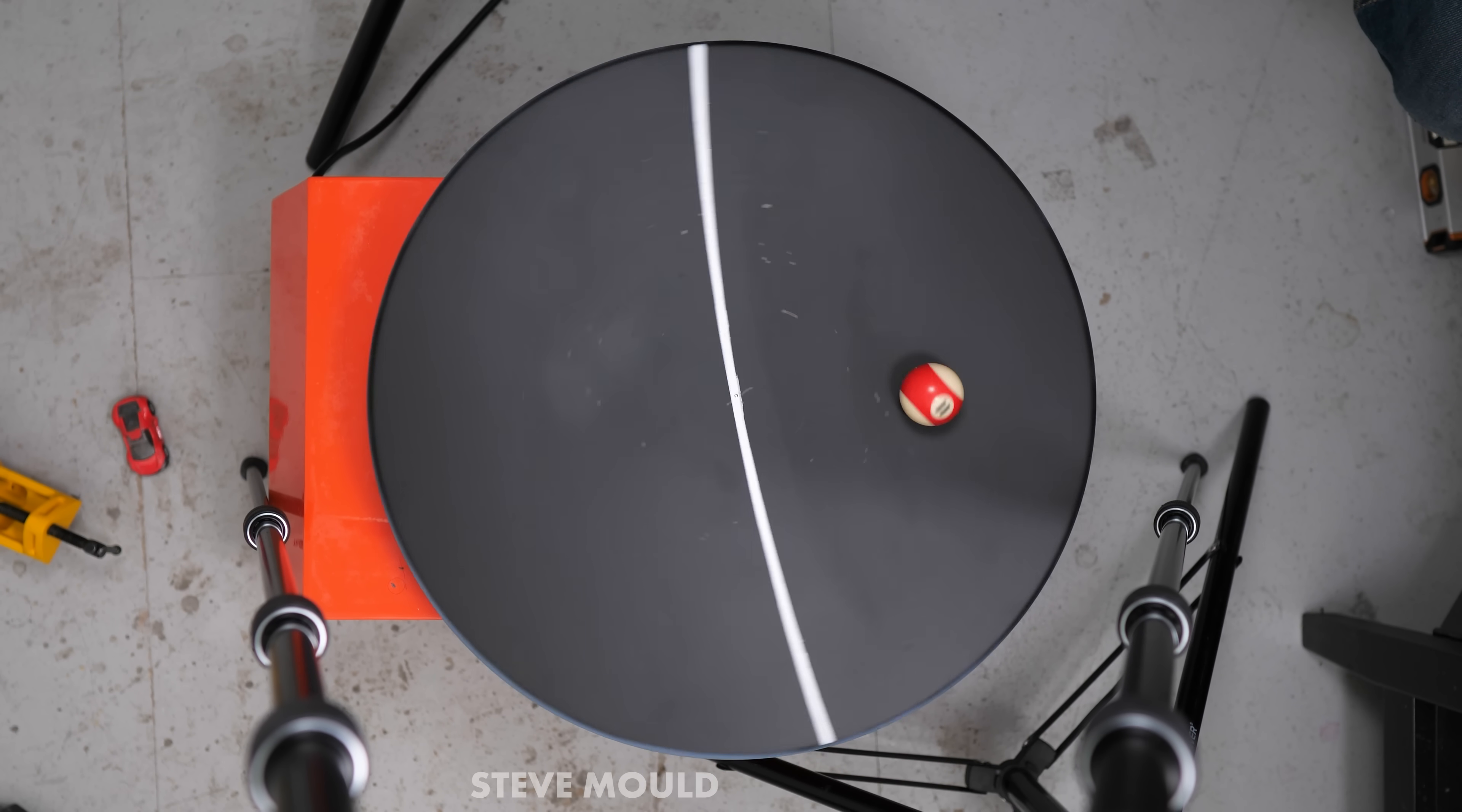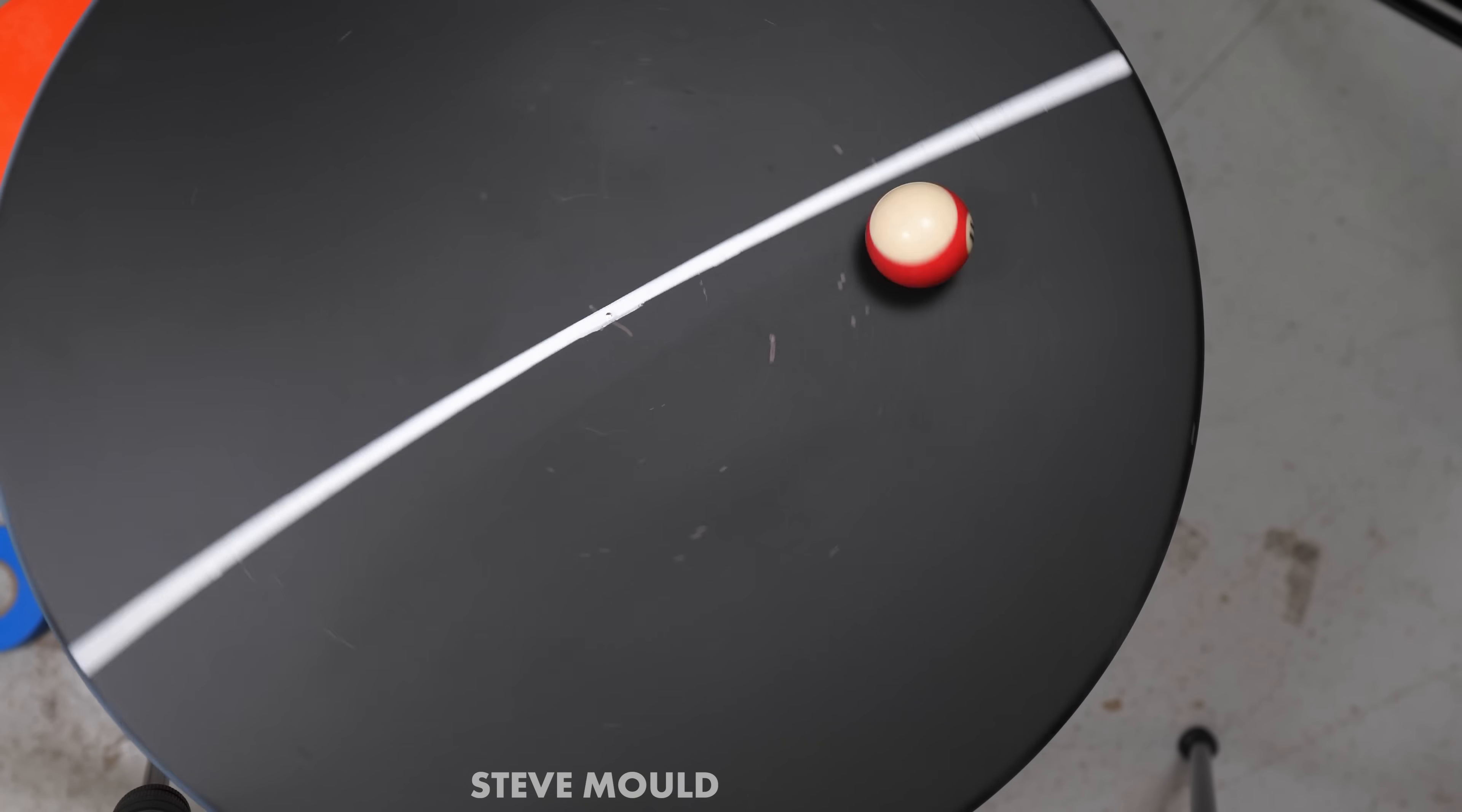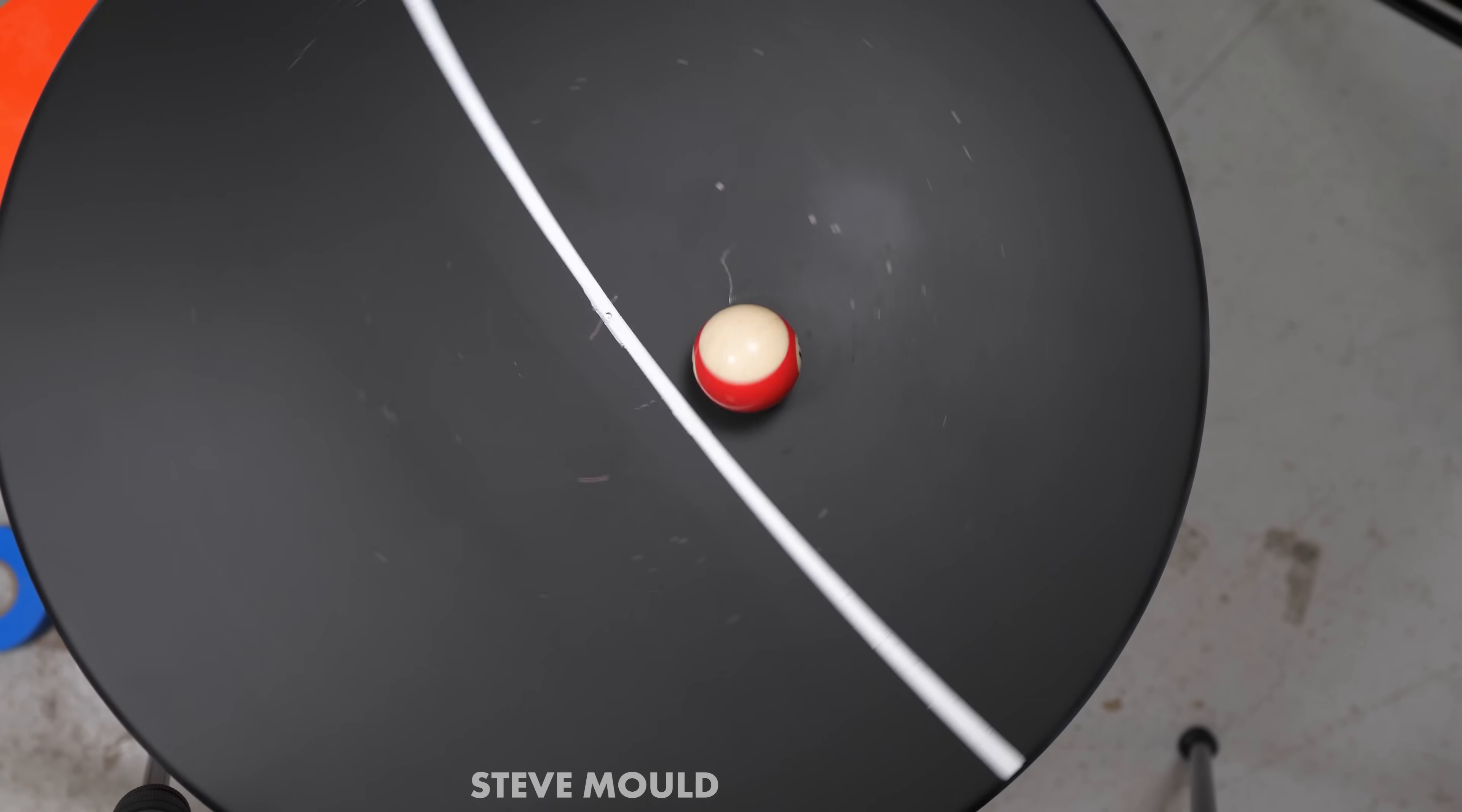And maybe that's the first clue as to what's going on, actually. But before we dive in, look what happens when I give the ball a little nudge. We're now back to that circular motion. Except this time, it's not circling around the center of the turntable, which is quite surprising.